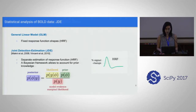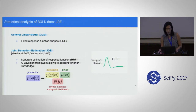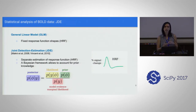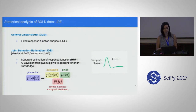Another model we can use is joint detection estimation — that is the model presented in the pyHRF toolbox. With joint detection estimation, besides measuring the amplitude of the effect, we also estimate the hemodynamic response function. We use a Bayesian framework that allows us to account for prior knowledge and to constrain the estimation.